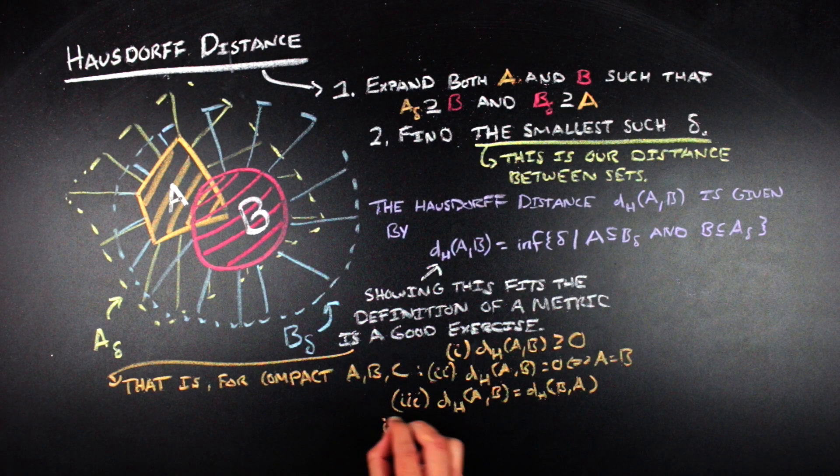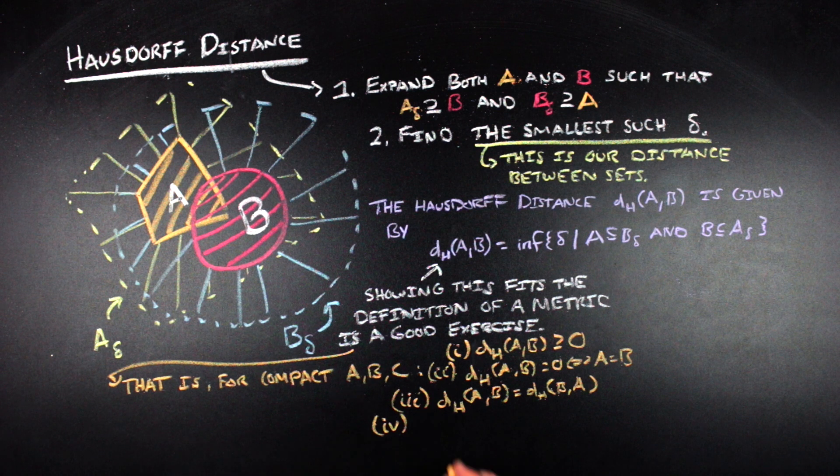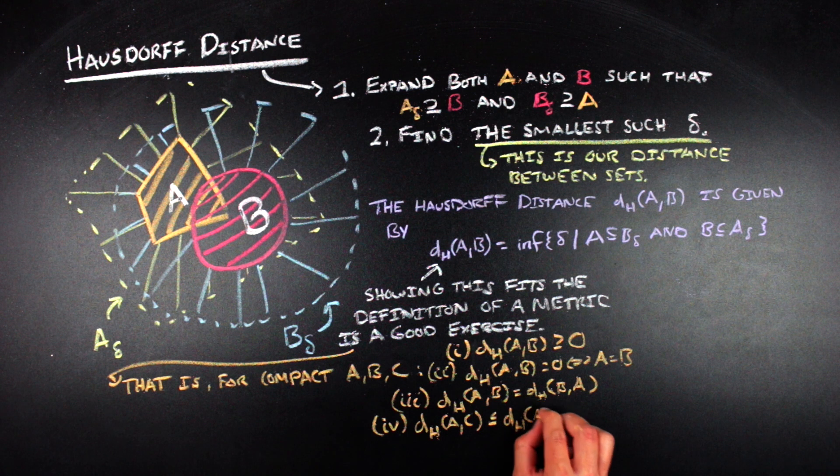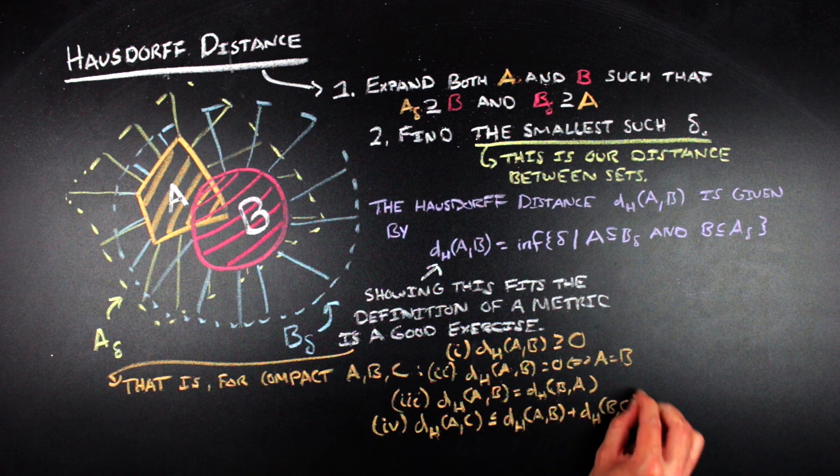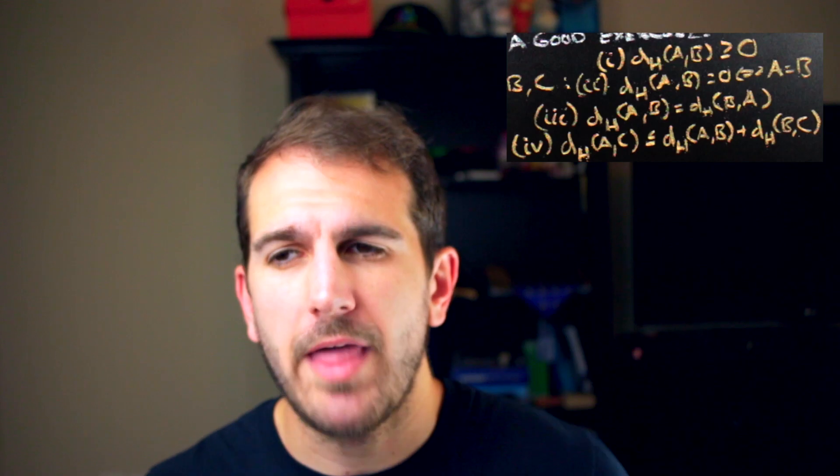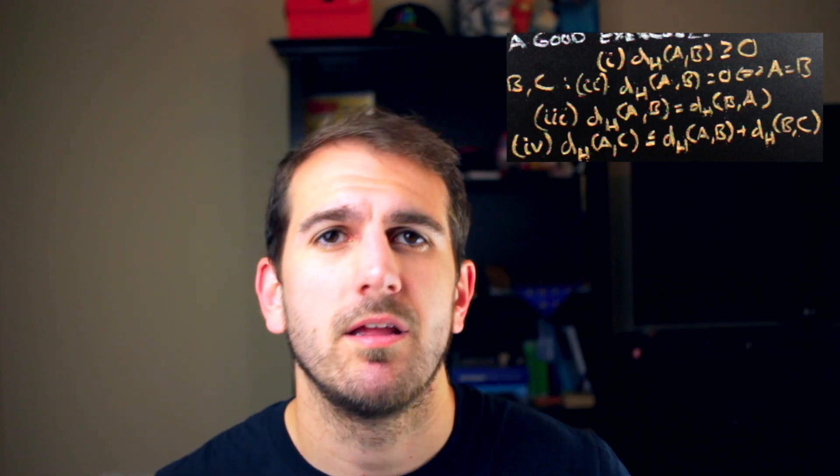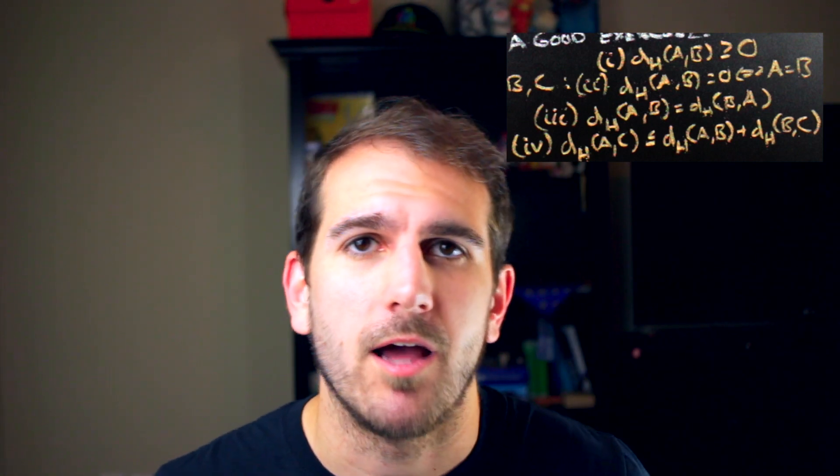So the fourth property, the triangle inequality, that is, that the Hausdorff distance between A and C is going to be less than or equal to the Hausdorff distance between A and B plus the Hausdorff distance between B and C. That one, I'm not gonna spoil. I already mentioned that I think it's a pretty fun and cool exercise, and if you're interested in this stuff, it's something that it'd probably help to think about to build your understanding of what this distance actually calculates. So I'm not gonna spoil it, I'm gonna leave that for you if you want to think about it, but anyway, yeah.